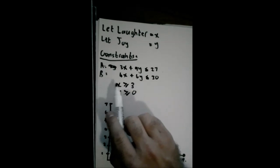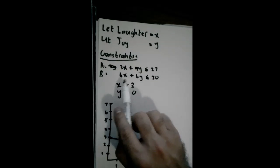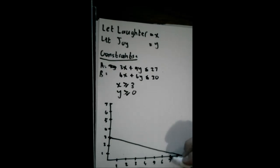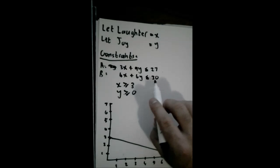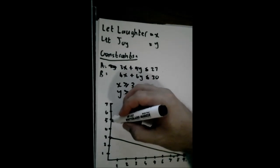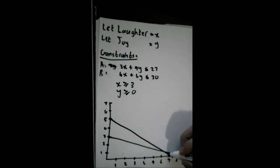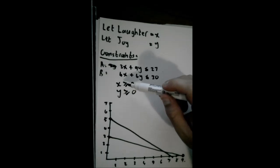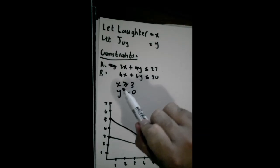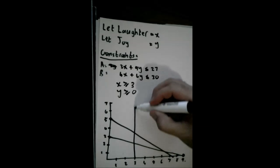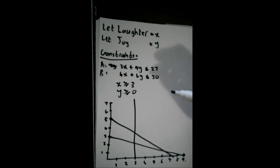For fragrance B, the x cut would be 4 times what gives you 30? That would be 4 times 7 and a half, which is right here. And 6 times what gives you 30? 6 times 5, which is right there. So that's our next constraint. We know also that x has to be greater or equal to 3, so draw a straight line up through the x-axis at 3.